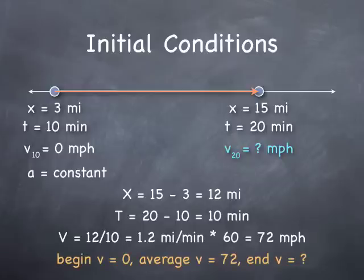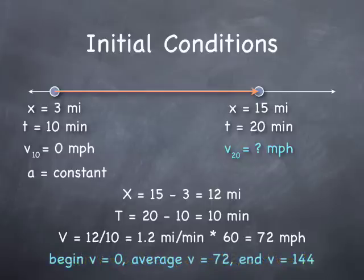Now, if we know the beginning velocity, 0, and we know the average velocity, 72, can we find the end velocity? Yes, we can. The end velocity must be 144 miles per hour, because 144 and 0 average out to be 72.